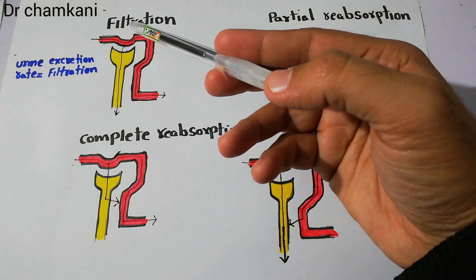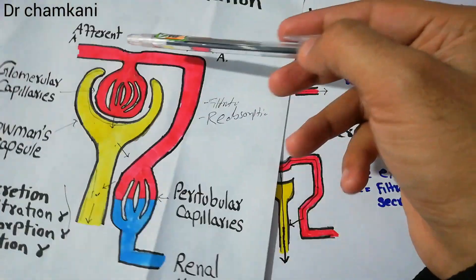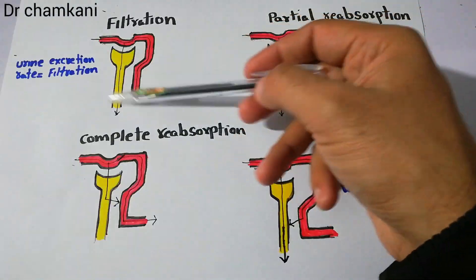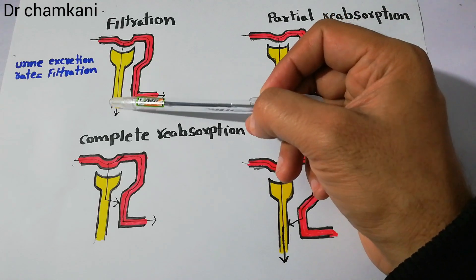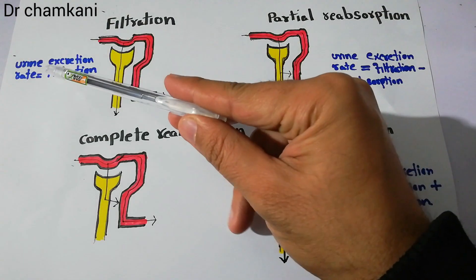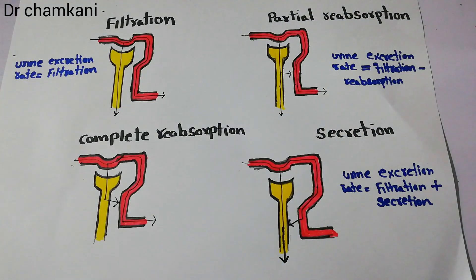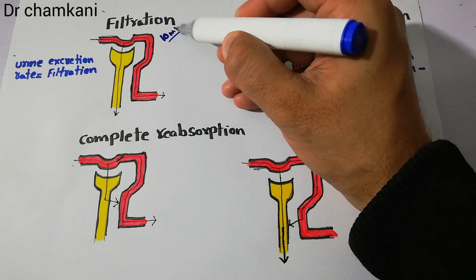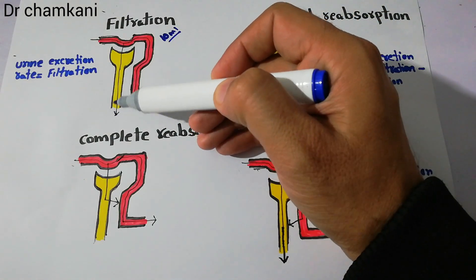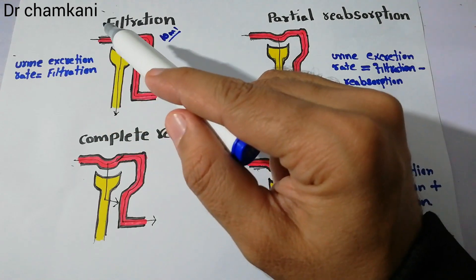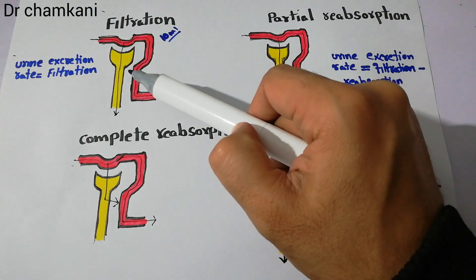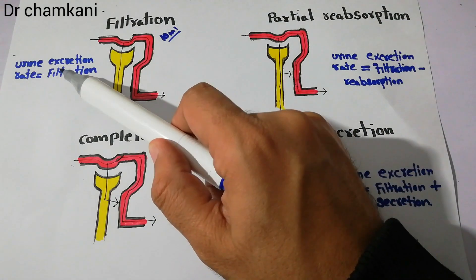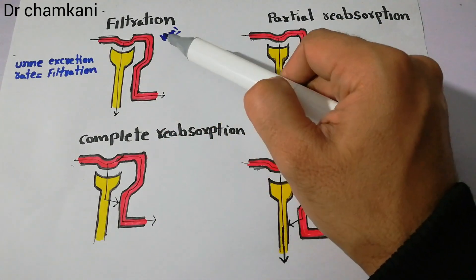If a substance is filtered and enters the Bowman's capsule and the tubules of the nephron and is not reabsorbed and not secreted, its urine excretion rate will be equal to its filtration rate. For example, if 10 ml of a substance is filtered and 10 ml is excreted, its urine excretion rate equals its filtration rate.